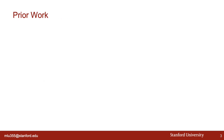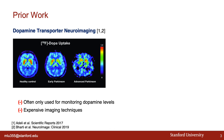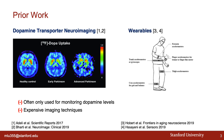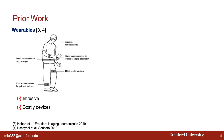Prior work on assessing Parkinson's with computerized methods typically uses either dopamine transport or neuroimaging, which is often only used for monitoring dopamine levels and needs expensive and sometimes invasive imaging techniques, or wearables such as accelerometers or gyroscopes, which can be intrusive and costly. However, some methods using wearables perform not just diagnosis, but also rate motor impairments based on severity.